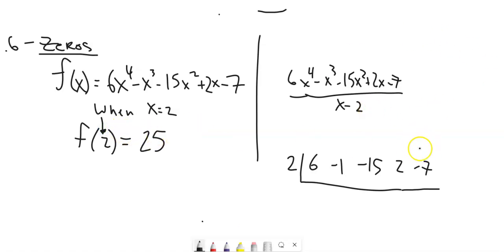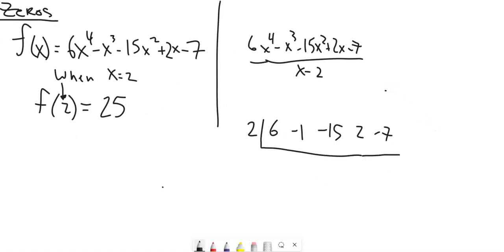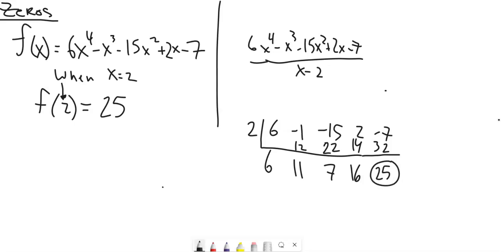So let me do synthetic division over here and see what happens. Bring it down, multiply, add, multiply, add, multiply, add — 16 — multiply, 32, add — 25. My remainder is 25.